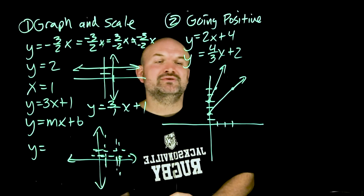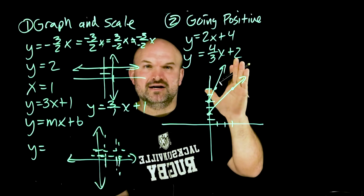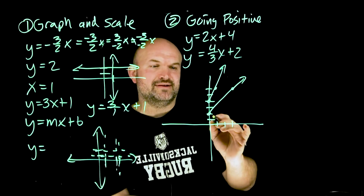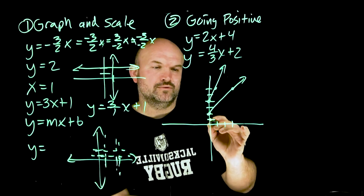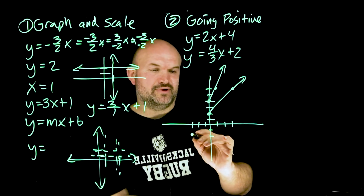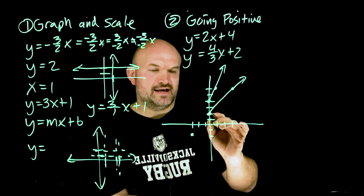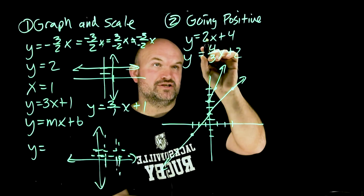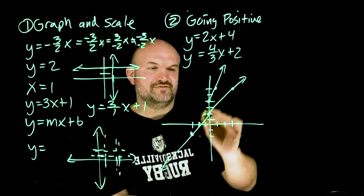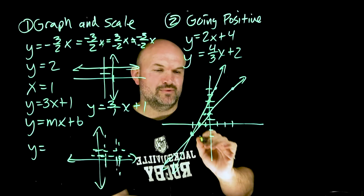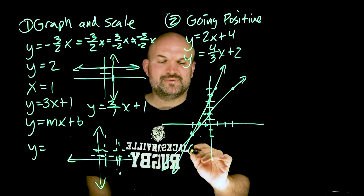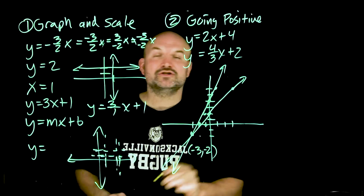In this case, we need to go the negative direction — down and to the left instead of up and to the right. So instead of going up 4 to the right 3, I go down 4 and to the left 3. Then for the other line, instead of going up, I go down 2 to the left 1, then down 2 to the left 1 again. You can see that the solution point — where these two lines intersect — is going to be at negative 3 comma negative 2.